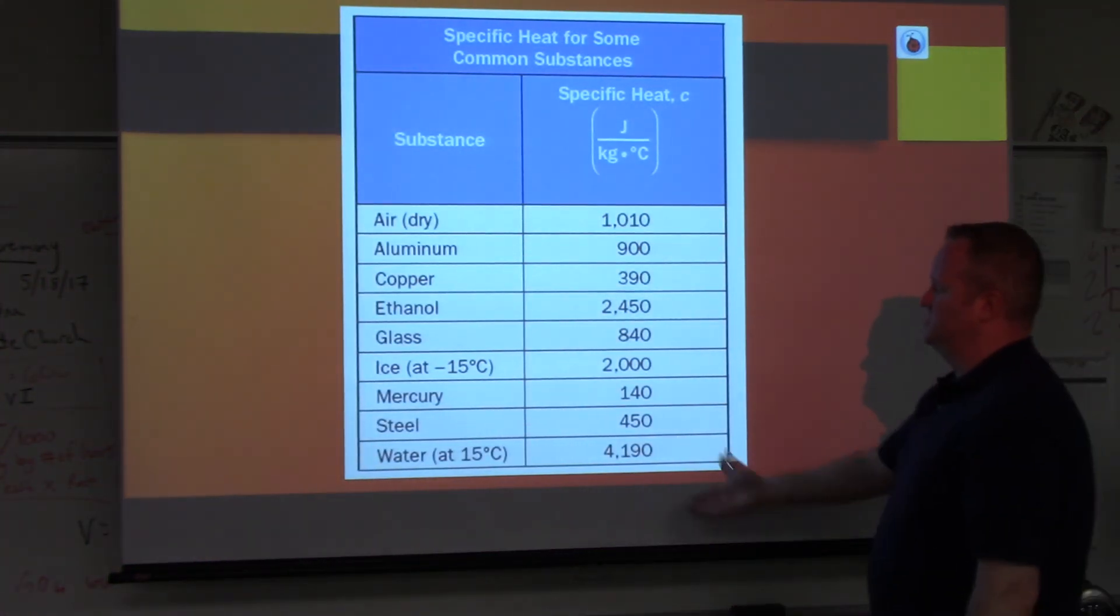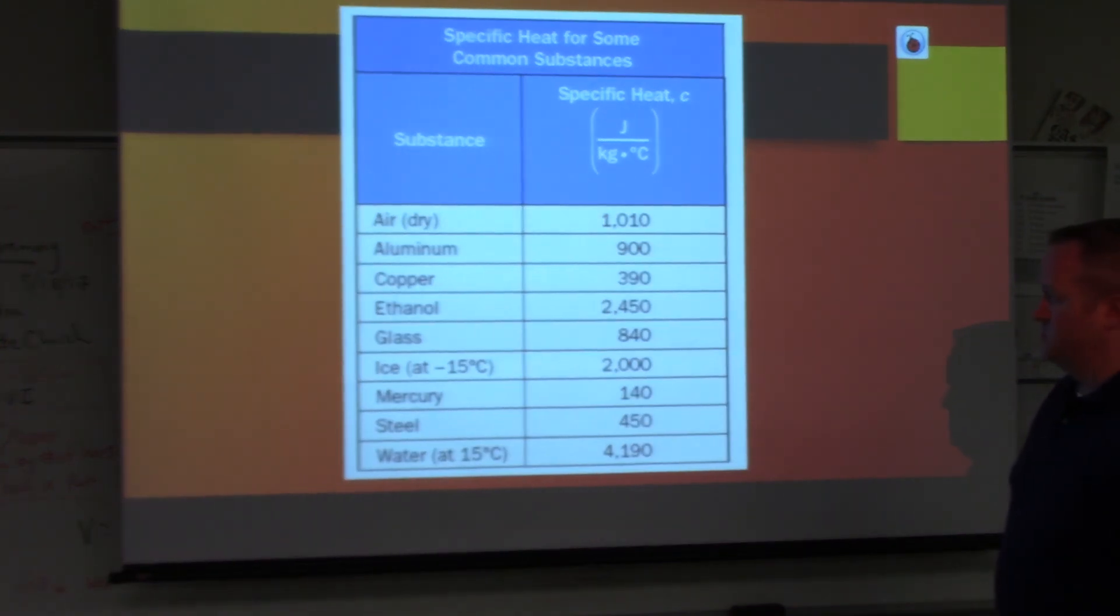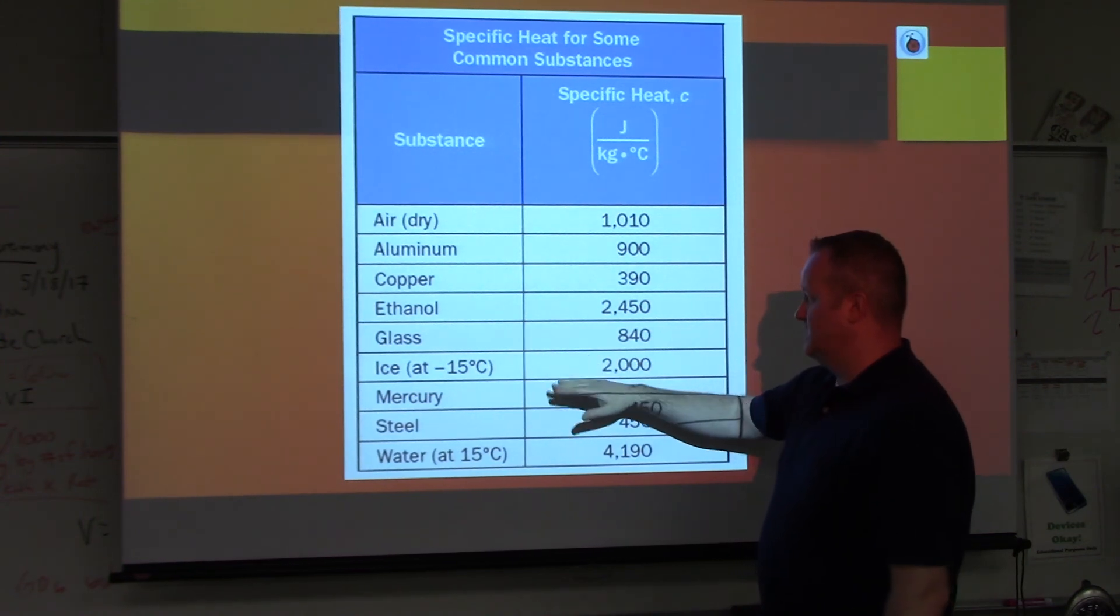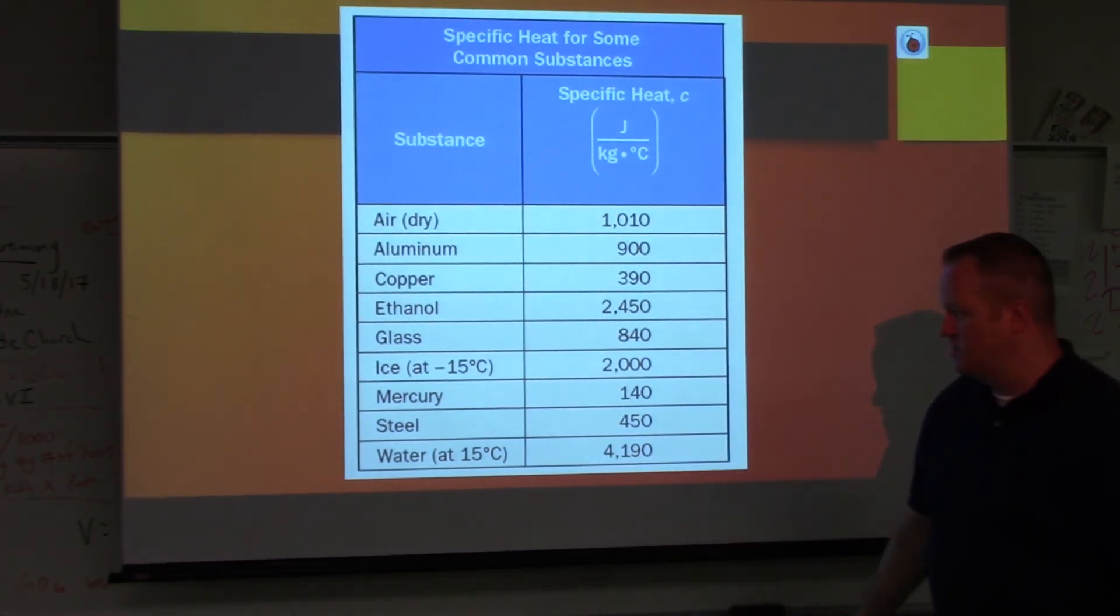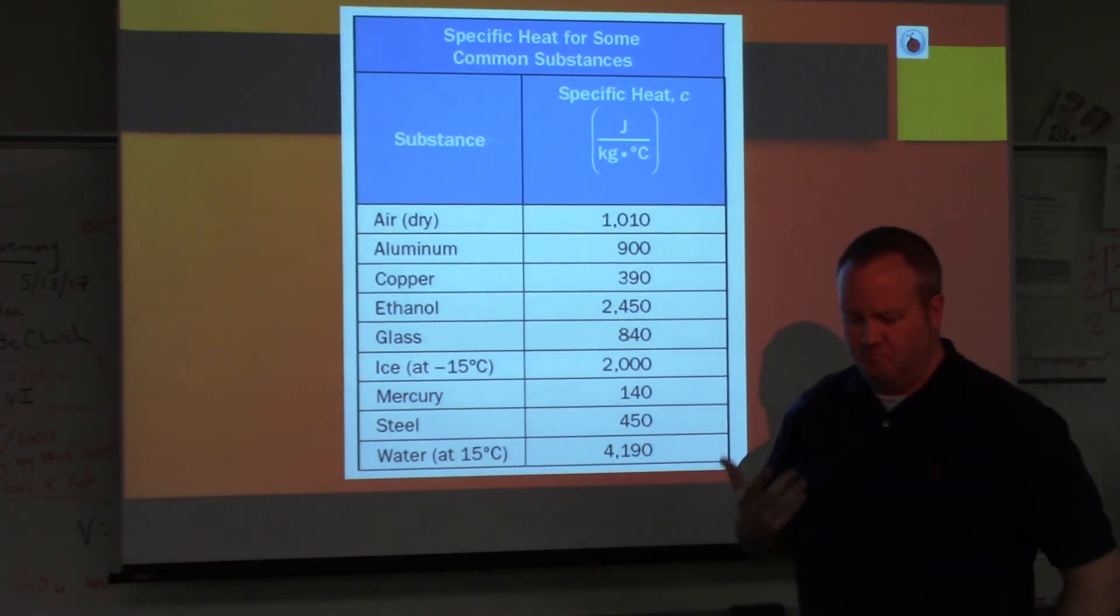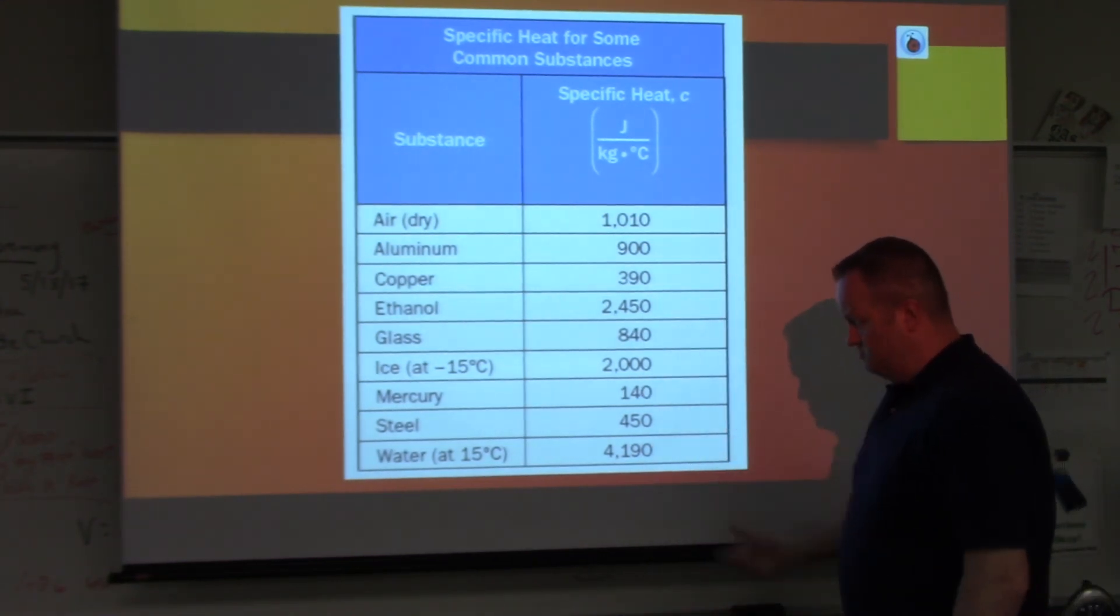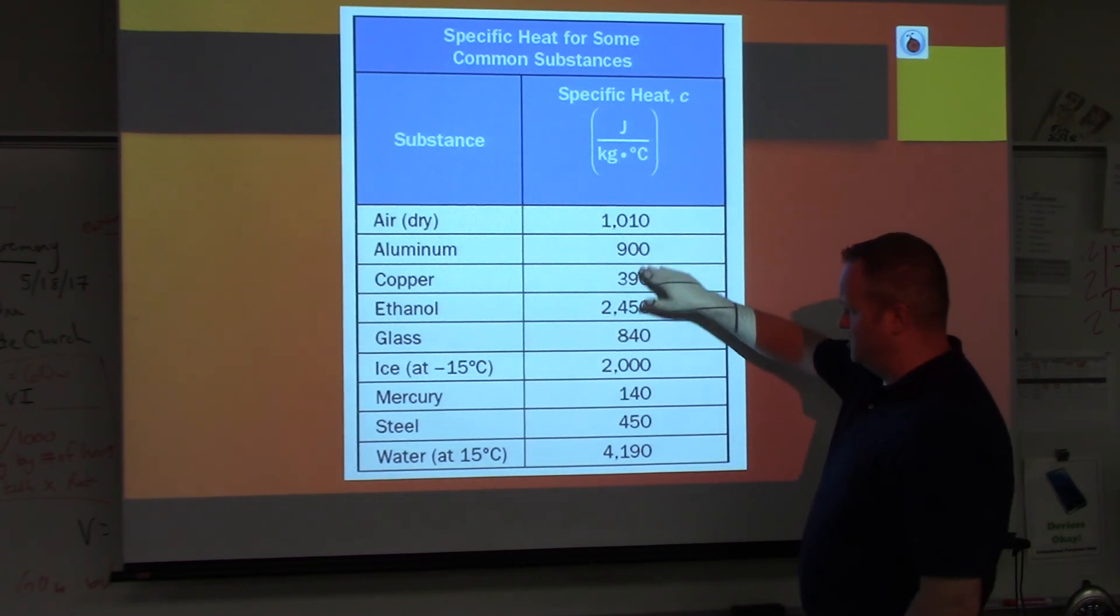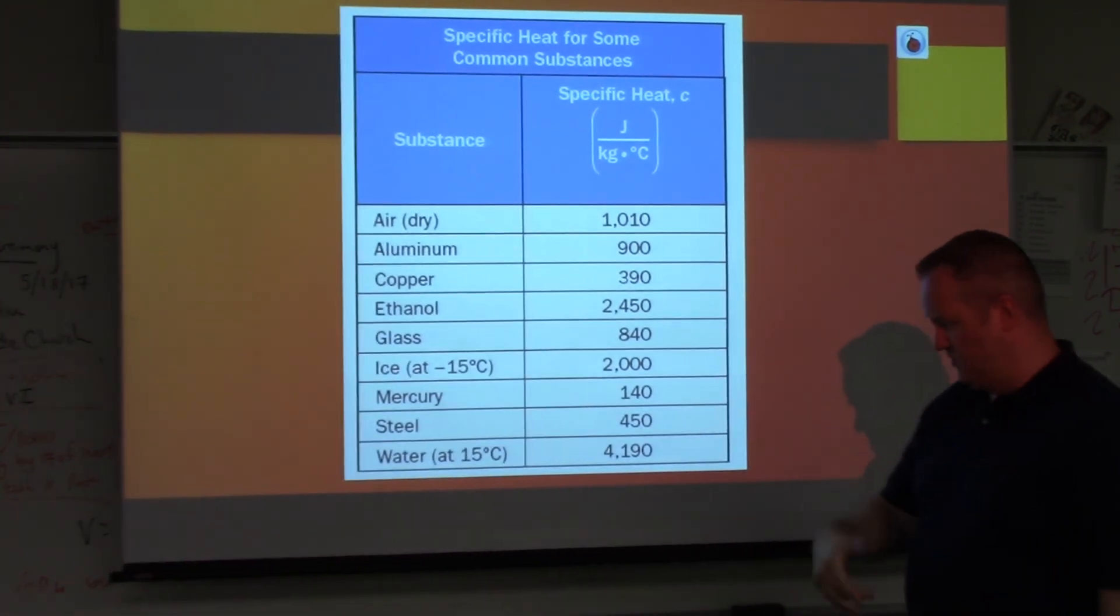Here are some samples of capacities for different substances. We have air, aluminum, copper, ethanol, glass, ice, mercury, steel, and water. And what you're going to notice here with this list is we know that metals are great conductors of heat. So when you look at this chart, things that are metal are going to have a much lower number because it's easier for them to transfer that energy.